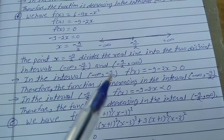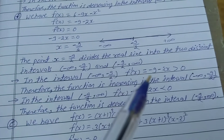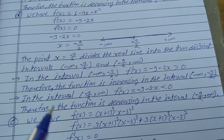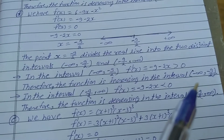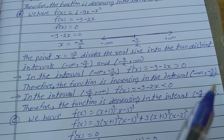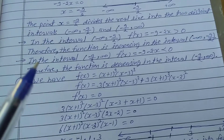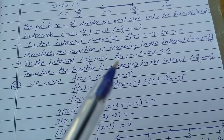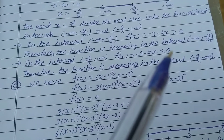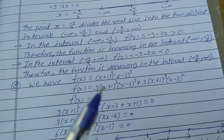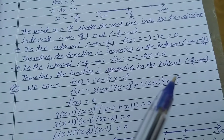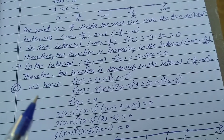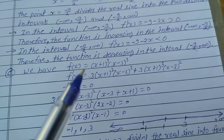In the interval (-∞, -9/2), f'(x) = -9 - 2x > 0, so the function is increasing in (-9/2, +∞). Wait — f'(x) > 0 means increasing in (-∞, -9/2). In the interval (-9/2, +∞), f'(x) = -9 - 2x < 0, so the function is decreasing in (-9/2, +∞).